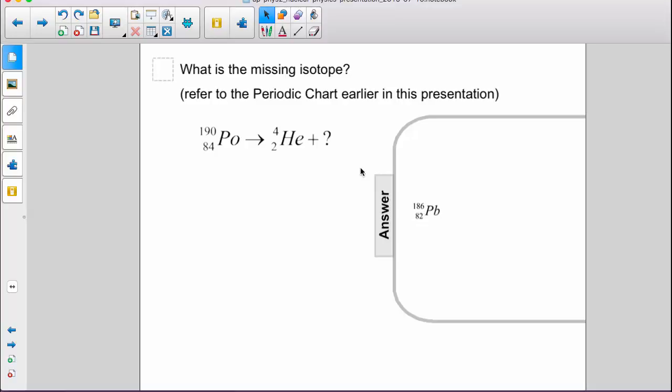To check, 186 plus 4 is 190 and 82 plus 2 is 84.